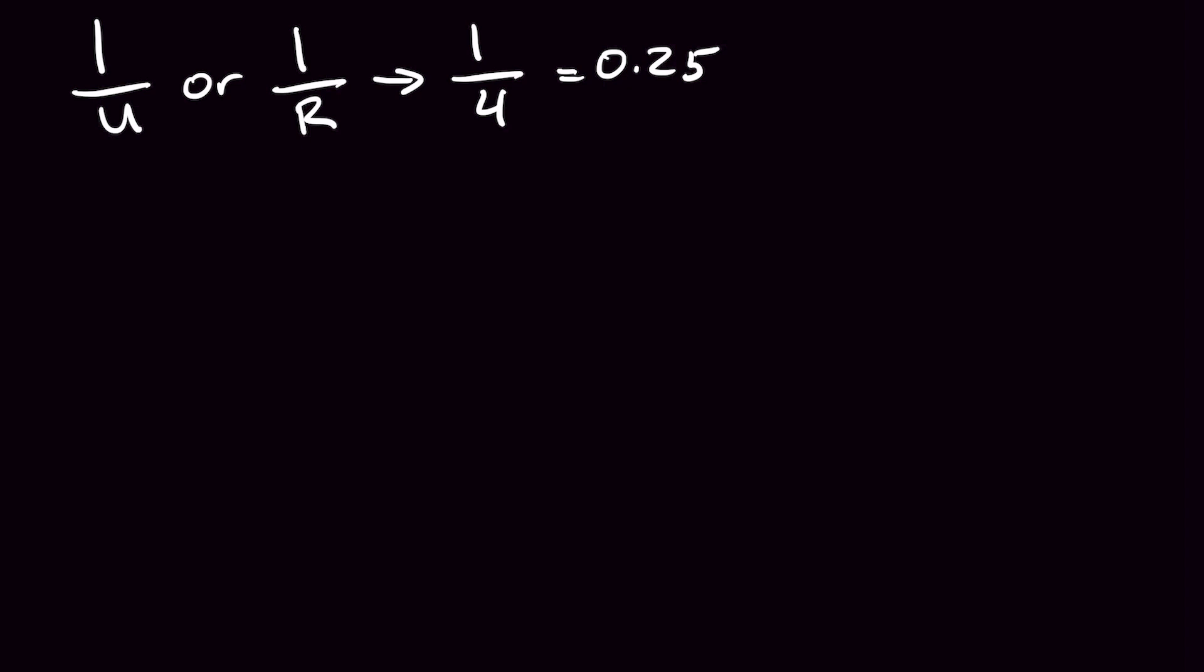It's important to pay attention to units of measurement. R value is an imperial measurement, so before you can calculate it you must convert the U value to imperial to match. You can do this by dividing the U metric number by 5.678.